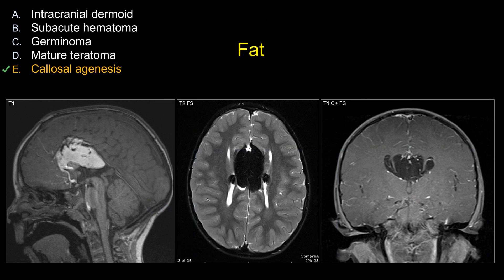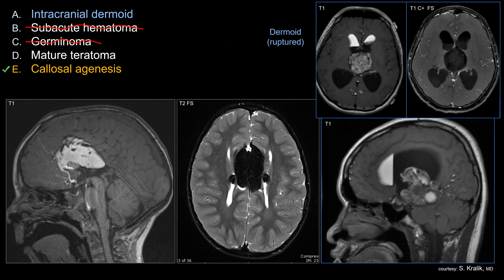That's the correct answer for this case. Looking at other choices that do not work: if you see the presence of fat, you can pretty much eliminate choice B as well as choice C, since neither of those regions should contain fat. As you can see, there is complete fat signal drop after fat saturation on T2 as well as post-contrast T1. Choices A and D do contain some fat element, sometimes quite a bit.